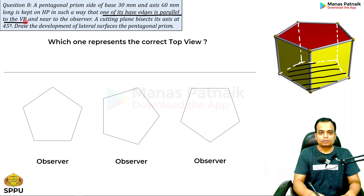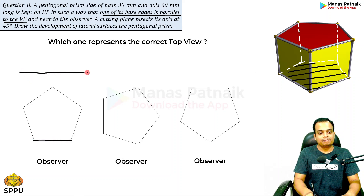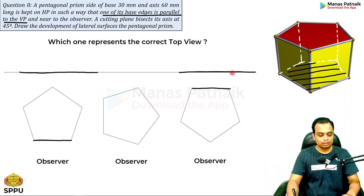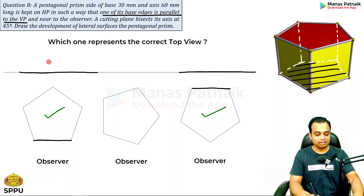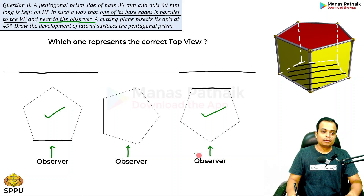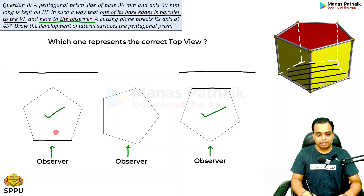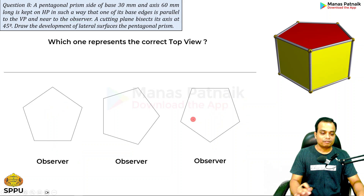If the base edge is parallel to the VP, it will be parallel to the XY line. Two of the options show a base edge parallel to XY, but the problem also states the edge is near to the observer. All of us are viewing the object from the front, so the base edge nearer to the observer is the correct choice. The other option, where the edge is farther away, is discarded.